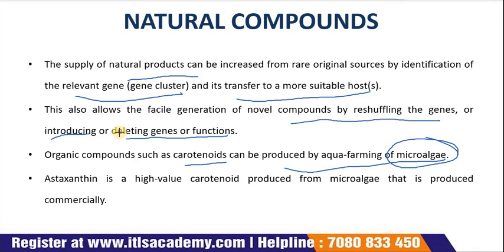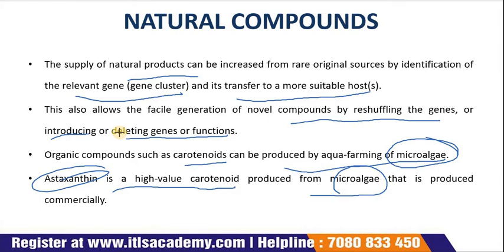An example is astaxanthin — a high-value carotenoid produced from microalgae that can be produced commercially. Astaxanthin is ubiquitous in nature, especially in the marine environment, and is responsible for eliciting the pinkish-red hue of the flesh of salmonids, shrimp, lobsters and dry flesh.